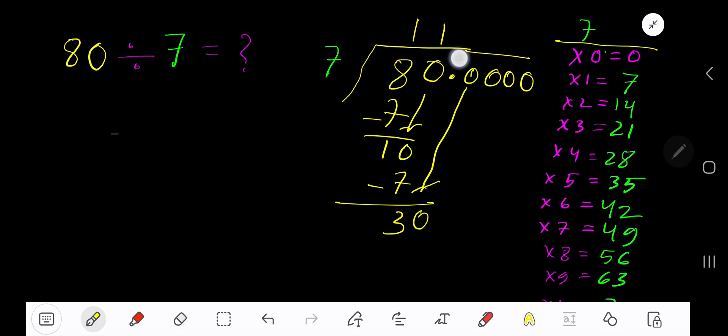Before the zero there is a decimal. Decimal must come to the question directly. 7 goes into 30 how many times? 5 times 35 which is greater, so 4 times. 4 times 7 is 28. Subtract 2, bring down another 0.